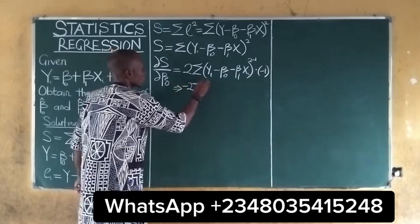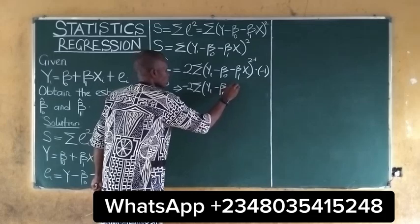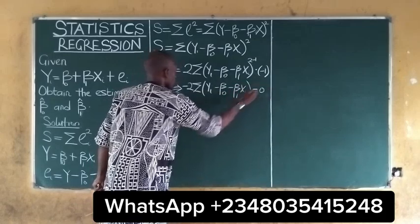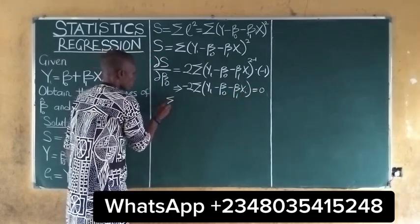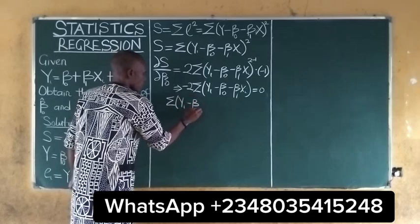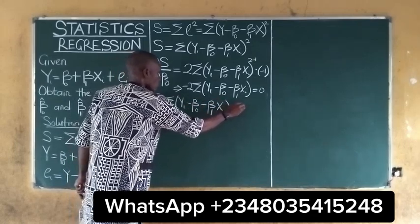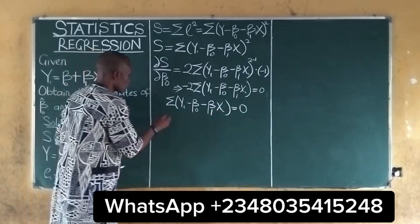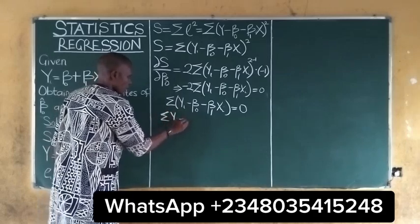which implies negative 2 summation of (Yi minus B0 minus B1*Xi) equal to zero. Then, of course, negative 2 cancels, giving us summation of (Yi minus B0 minus B1*Xi) equal to zero. All we need to do is take the sum of all of this. Summation of Yi minus,